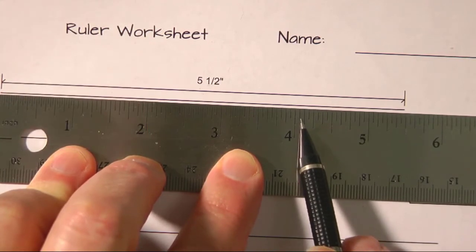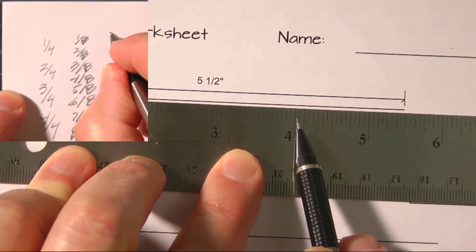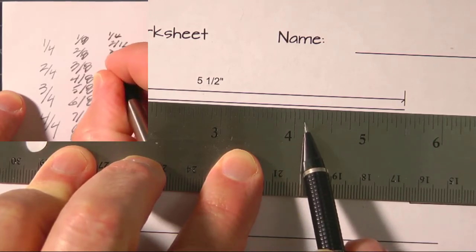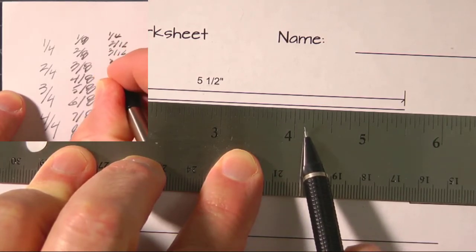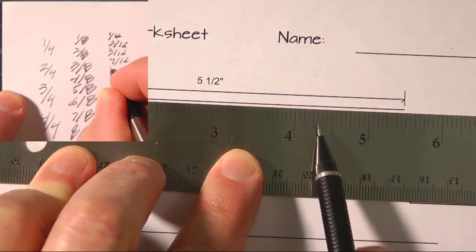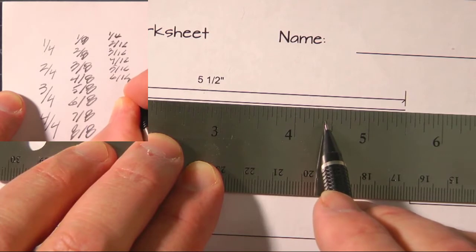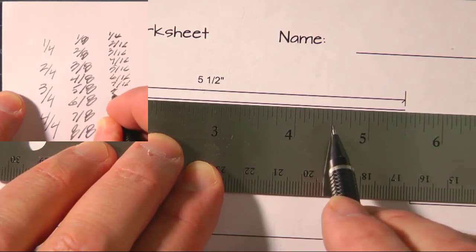In between those, the tiniest lines are sixteenths. So we have four and one sixteenth, or four and two sixteenths, which is also one eighth, three sixteenths, four sixteenths, which is also a quarter, five, six, three eighths, seven, eight sixteenths, which is a half.